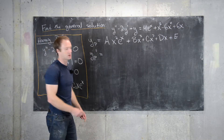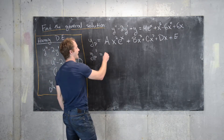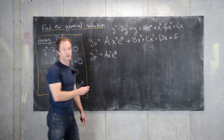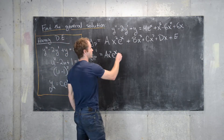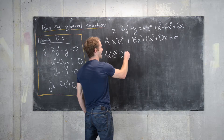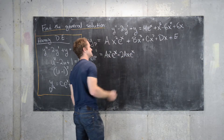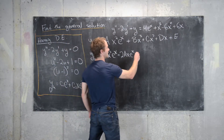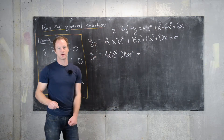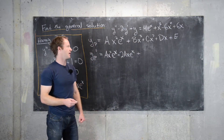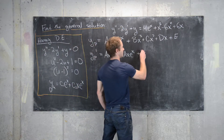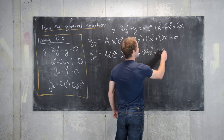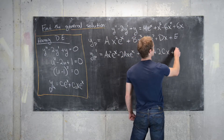Taking the first derivative y_p', we use the product rule on the exponential part: the derivative of e^x gives a·x²·e^x, and the derivative of x² gives 2a·x·e^x. Then the derivative of the polynomial part gives 3b·x² + 2c·x + d.